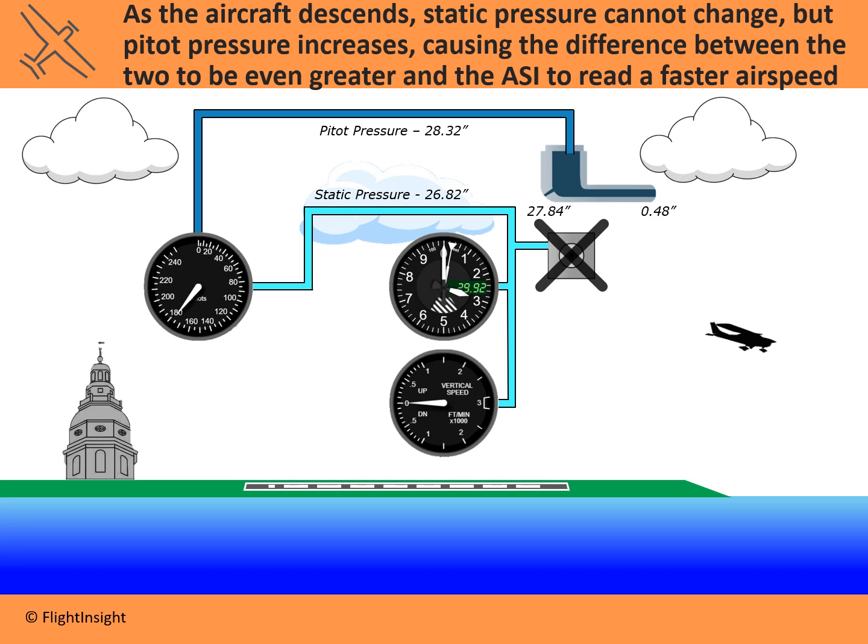As we've descended — say from 3,000 to 2,000 feet — the altimeter will still tell us we're at 3,000. In addition to that, the airspeed indicator — remember this works off of changes in air pressure — we've just increased the pitot pressure by descending but held the static pressure constant. So the difference between the pitot and the static pressure will have increased inaccurately. It's not that we're actually increasing the airspeed of the aircraft, but the airspeed indication has gone from 100 knots to 180 just by descending. The airspeed indication will inaccurately read higher as we've descended.